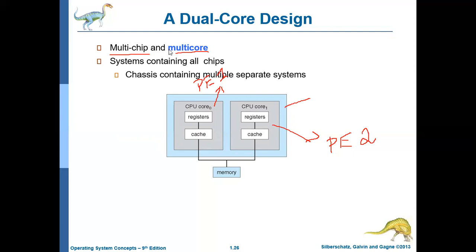So what is the difference between multi-core and multi-chip? In a multi-chip based system, each processor is placed in a separate chip. Whereas in multi-core, multiple cores are placed in a single chip. Performance-wise, a multi-core system performs better than multi-chip systems.